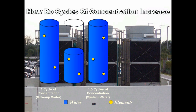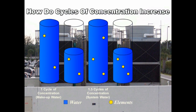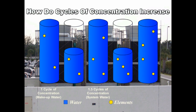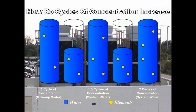If the tower evaporates half the water again and fresh water is added to replenish the loss, the elements in the tower water will have increased another 50%. The tower now has twice the elements as the incoming water, which represents two cycles of concentration.